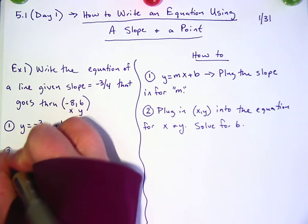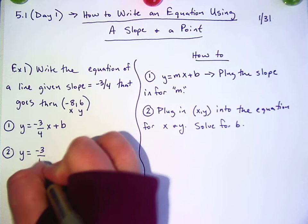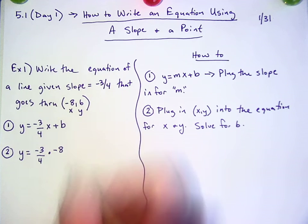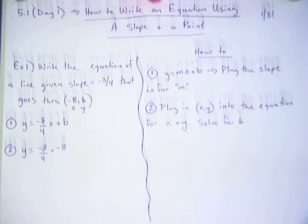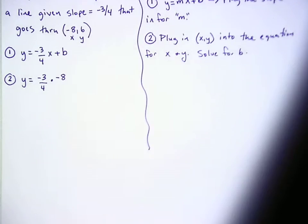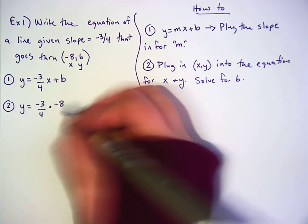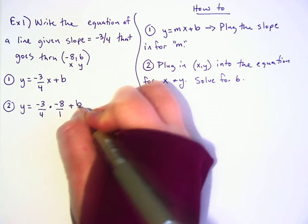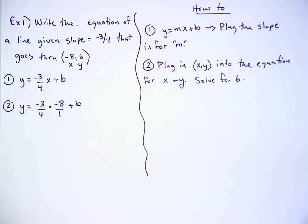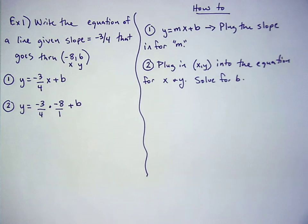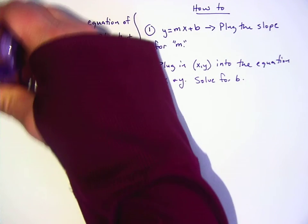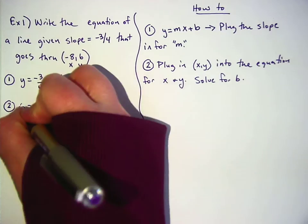Okay, so I'm going to rewrite this. y equals negative three-fourths times x. x is negative eight on this one, but how can I write it like another fraction? So it would be easy to multiply. Yeah? Negative eight over one. And I'm also, instead of writing y, I'm going to plug in six. I should have done that right away. So I'm going to fix that really quick.